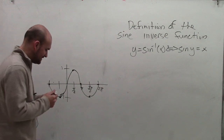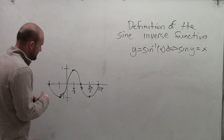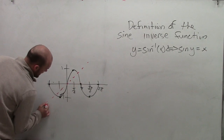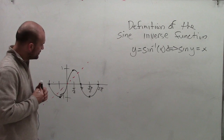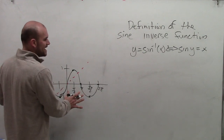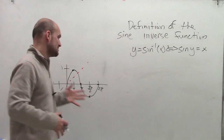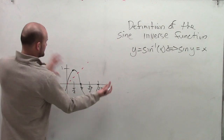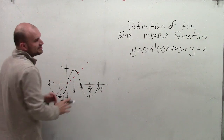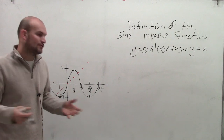When talking about graphing the inverse of a function, what we do graphically is reflect the graph about the x-y line. When we do that with the sine function, it gets a little difficult because the sine function goes on and on forever in the positive and negative direction. So when you reflect it over the x-y line, the graph is now going to go vertical.